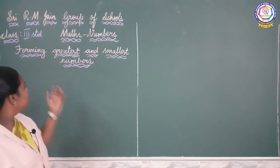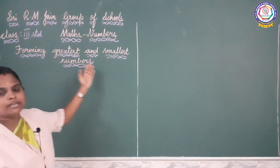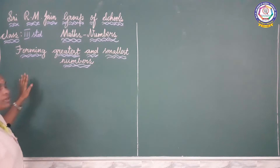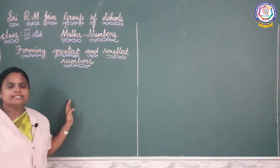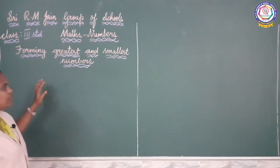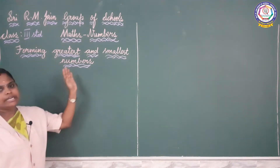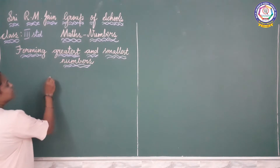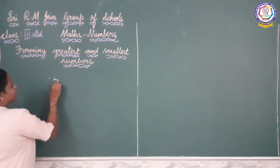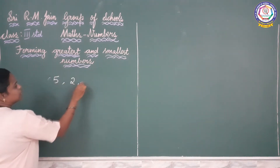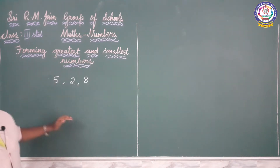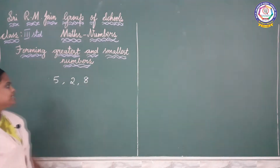In today's class we are going to see forming greatest and the smallest numbers. So let us take any 3 numbers or 2 numbers and then we will compare the numbers. Then we will find out the greatest number and the smallest number. So let us take 5, 2, and then 8. Then we will form the greatest number and the smallest number.